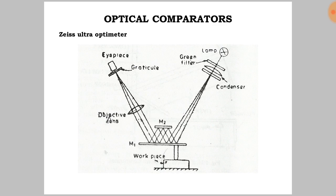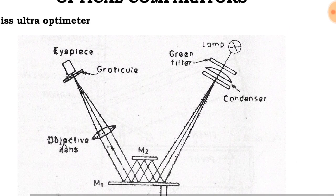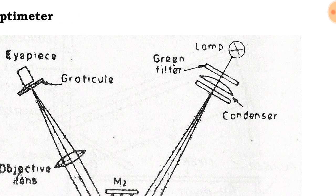The optical system of this instrument involves double reflection of light and thus gives a high degree of magnification. A lamp sends light rays to a green filter which filters all but green light, which is less fatiguing to the eye.